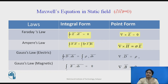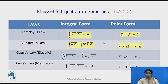Another table shows Maxwell's equations in a static field. For the static field, we replace the partial time derivative ∂/∂t with zero, since in a static field ∂/∂t equals zero. When we substitute this into the general equations, four simplified terms are obtained.